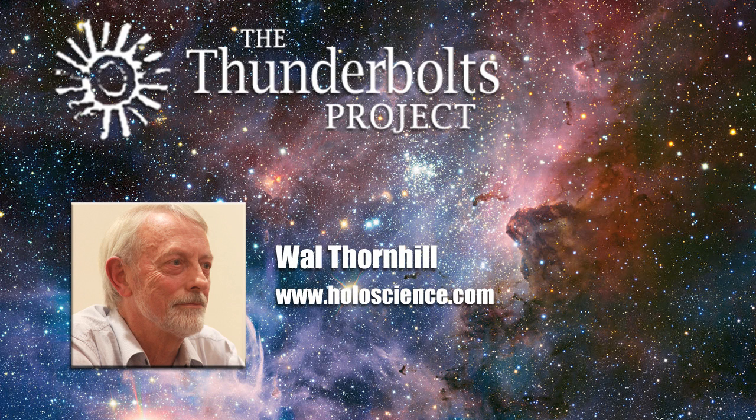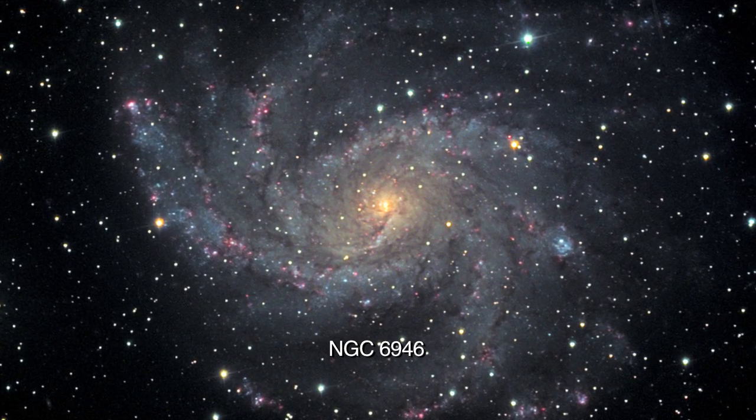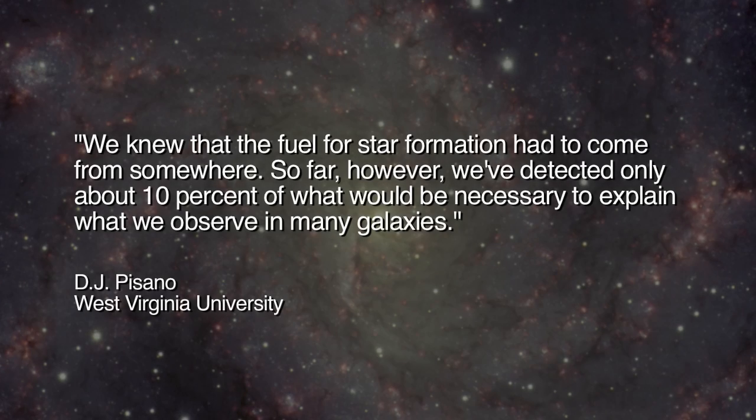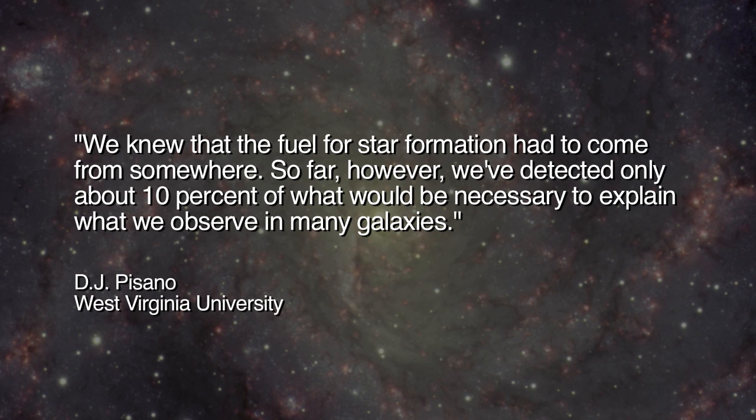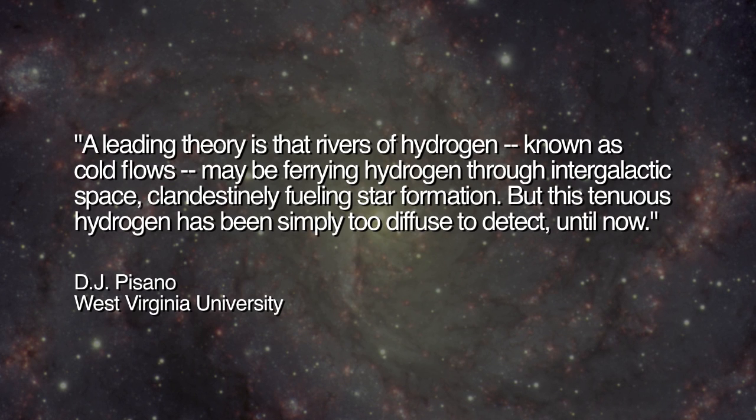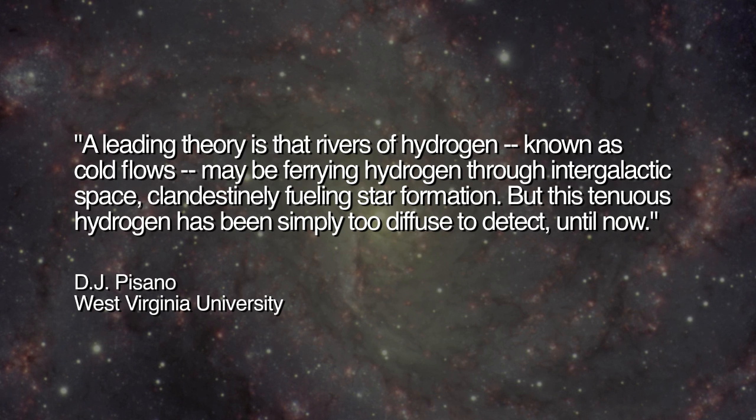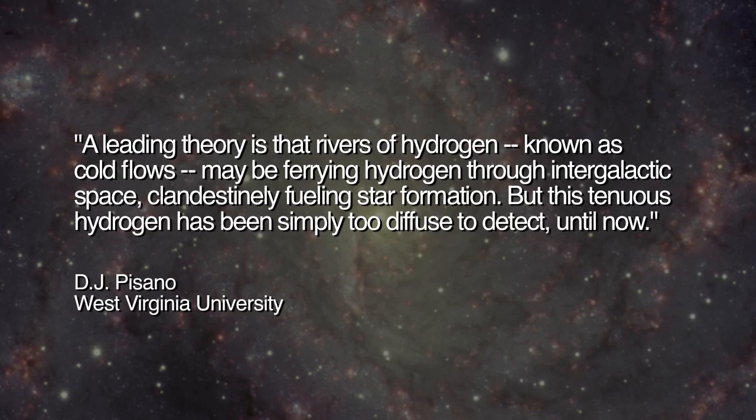The article goes on: this very faint, very tenuous filament of gas is streaming into the nearby galaxy NGC 6946 and may help explain how certain spiral galaxies keep up their steady pace of star formation. Dr. Pisano says we knew that the fuel for star formation had to come from somewhere. However, we've detected only about 10% of what would be necessary to explain what we observe in many galaxies. A leading theory is that rivers of hydrogen known as cold flows may be ferrying hydrogen through intergalactic space, clandestinely fueling star formation. But this tenuous hydrogen has been simply too diffuse to detect until now.